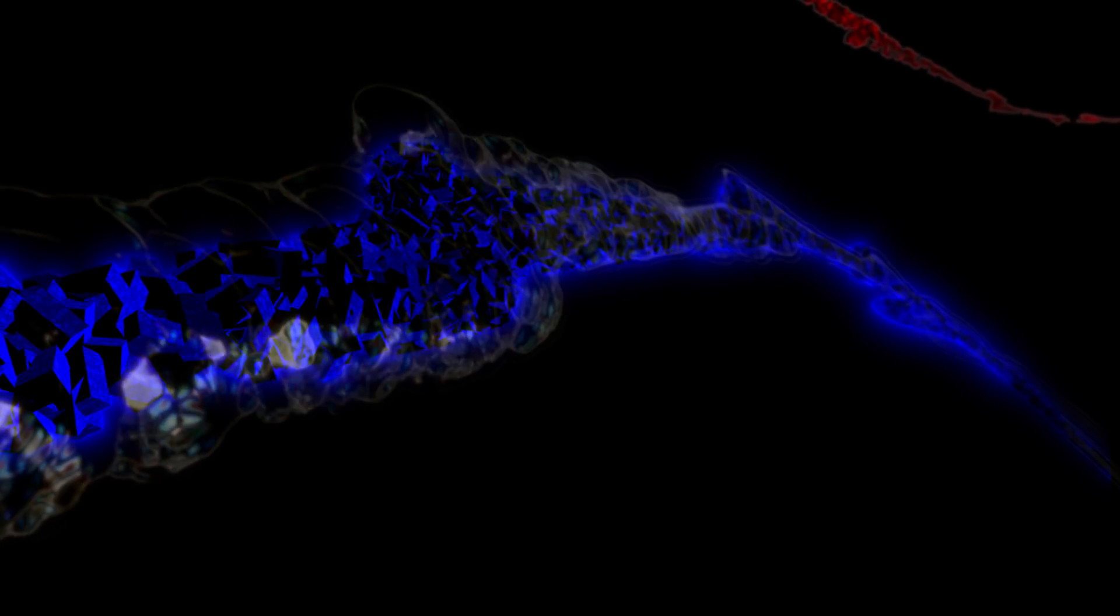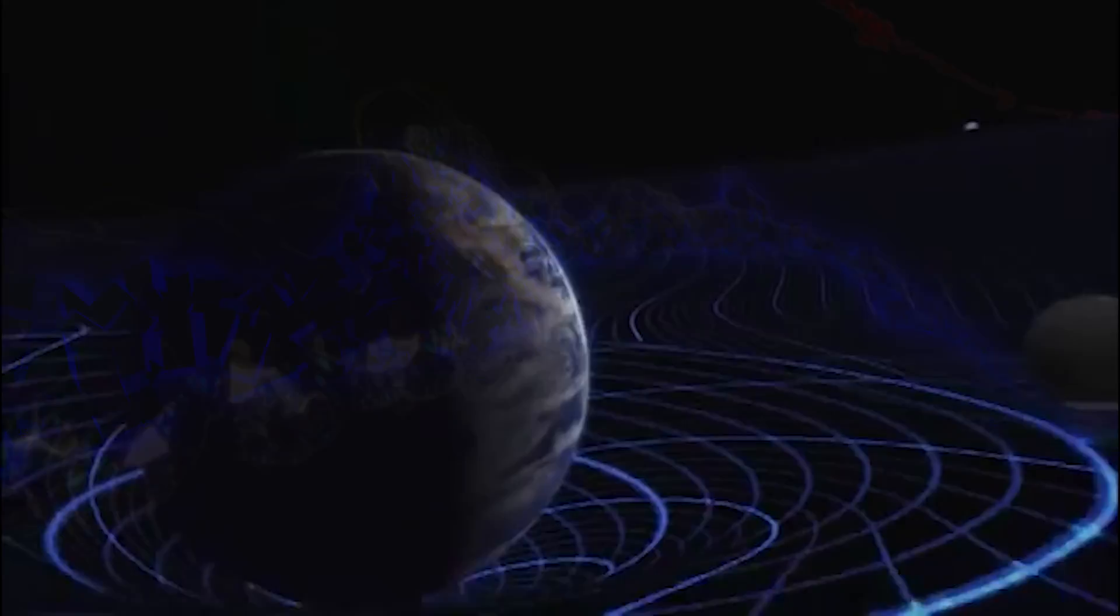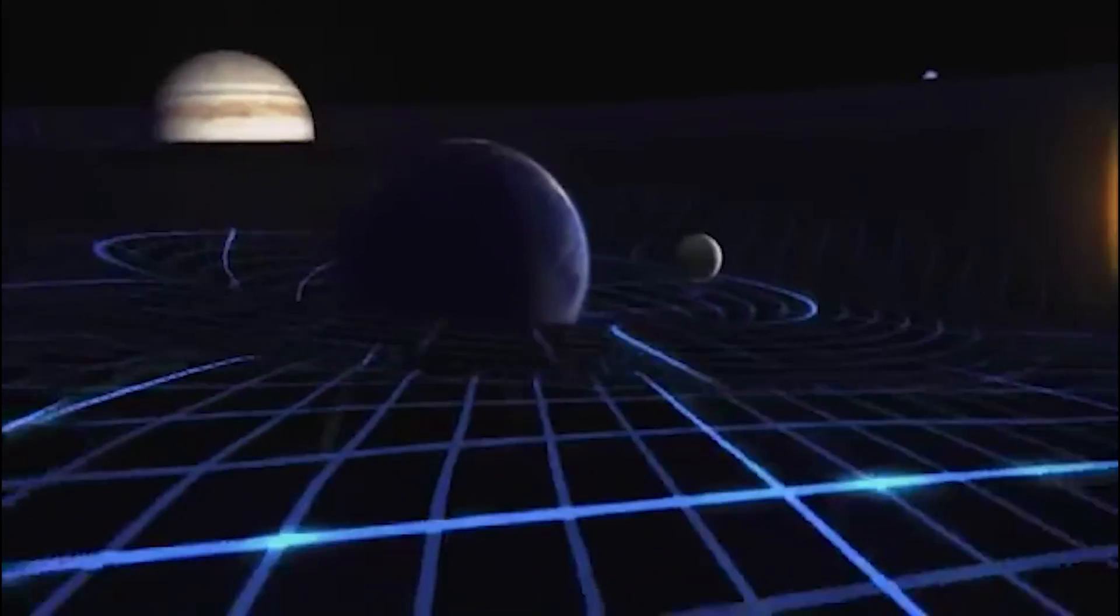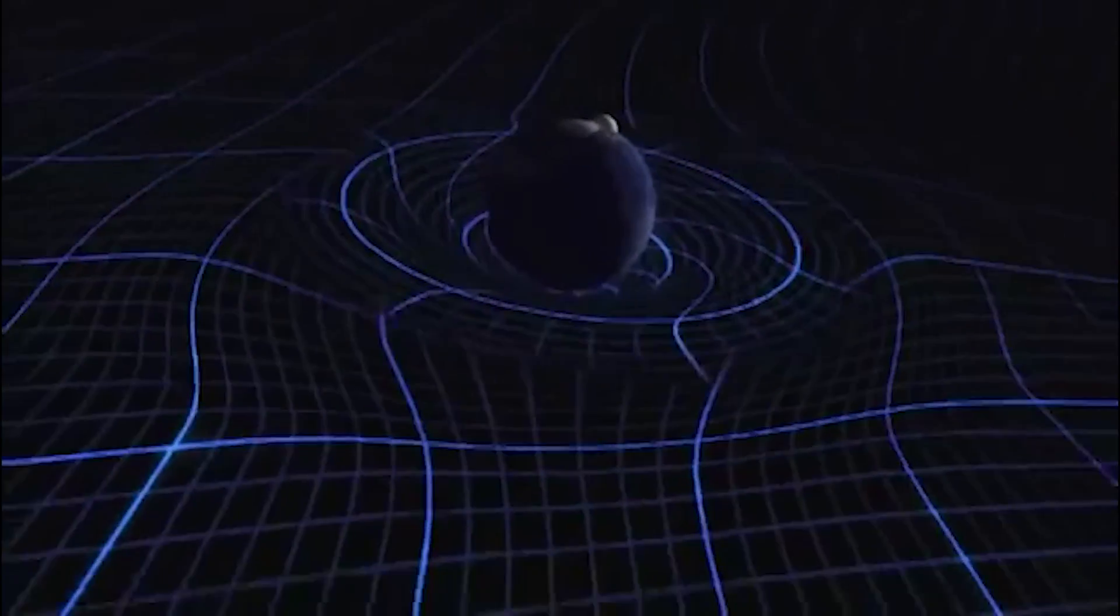Perhaps every particle and antiparticle was born with its own personal bubble of space-time. And when the matter and antimatter were shoveled into the filaments, maybe they took their own personal bubbles of space-time with them. General relativity actually allows matter to drag space-time along with it. It's called frame dragging.